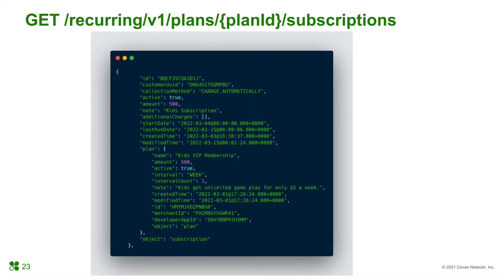Like the recurring payment plans APIs, you can call a GET request to retrieve all the subscriptions you have created. Any merchant-created subscriptions will not return in the JSON response. The JSON response will have very detailed information — for example, the subscription ID, customer UUID, the plan information, the first time it started, and the last time an invoice was sent.